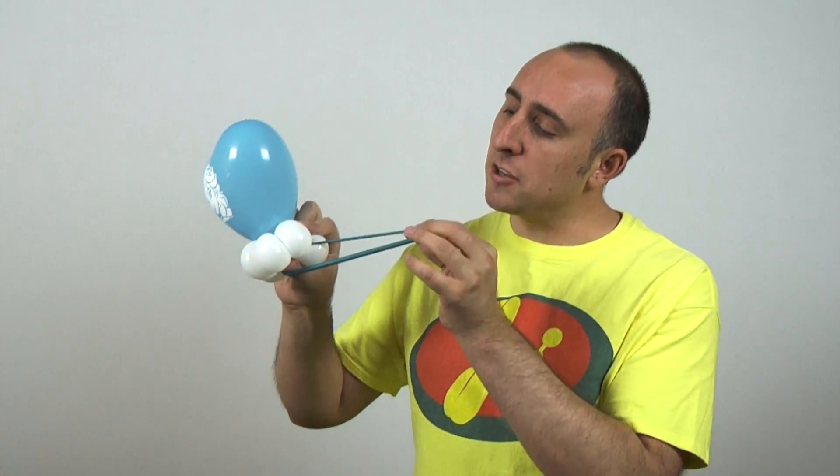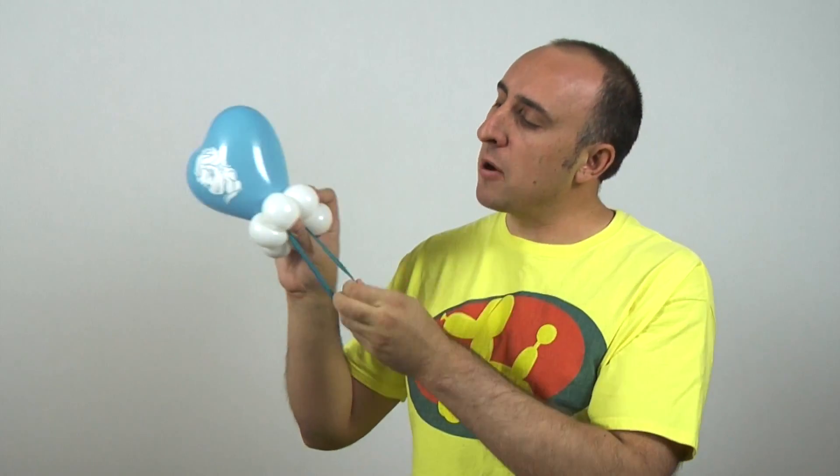If you're giving this to a little kid, the bracelet might be too big. If that's the case, take it, stretch it out, wrap it around the flower petal a couple of times. And this will make it smaller so it'll fit their wrist. And there we go, one character print on a flower bracelet.